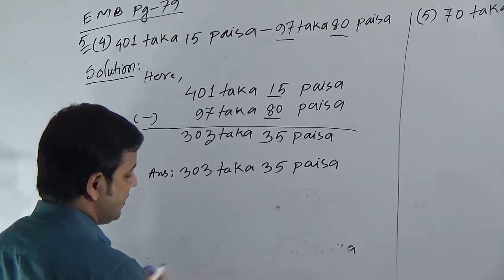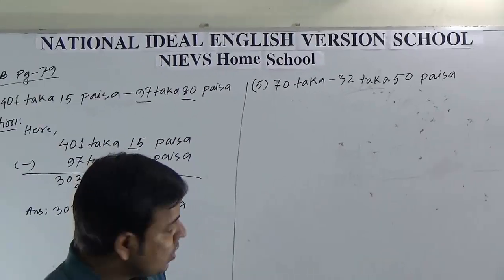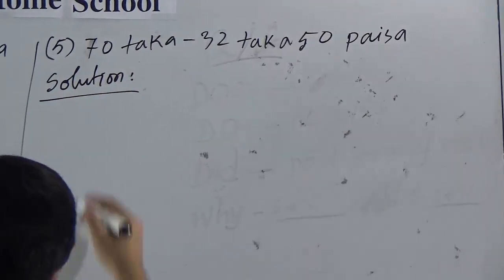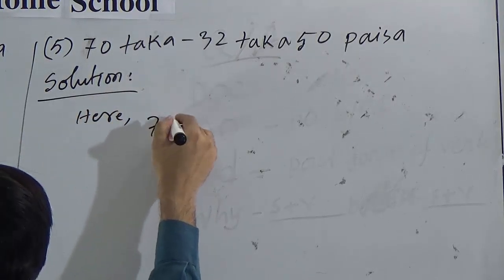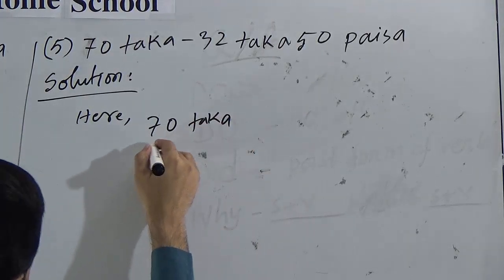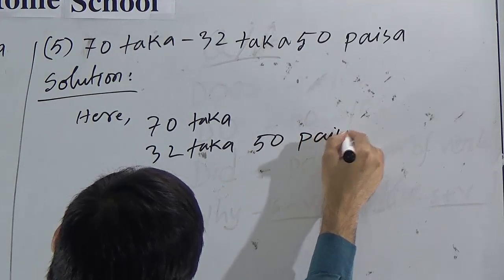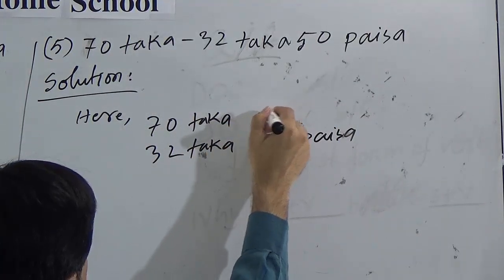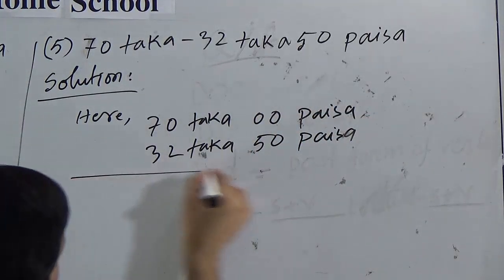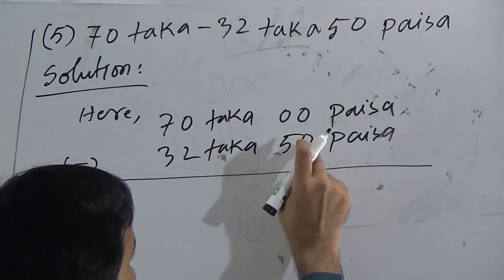Students, in the same process we have to solve the next question. This is also a subtraction. Here we have 70 taka minus 32 taka and 50 paisa. But here there is no paisa, so we have to write 00 paisa. Give the subtraction sign here.